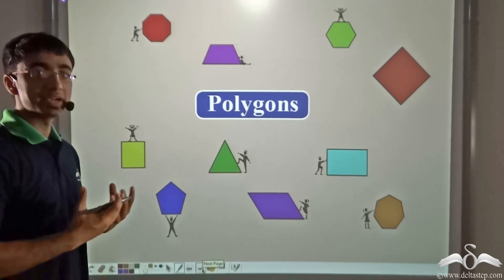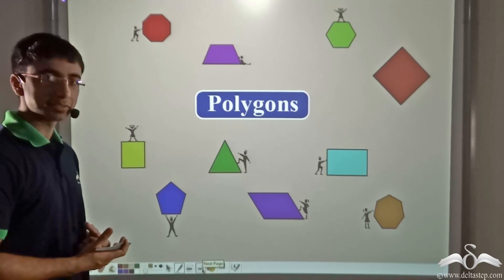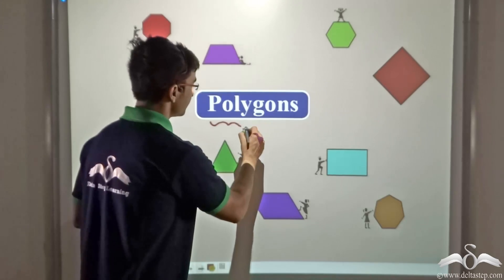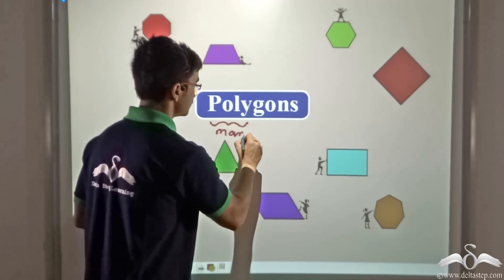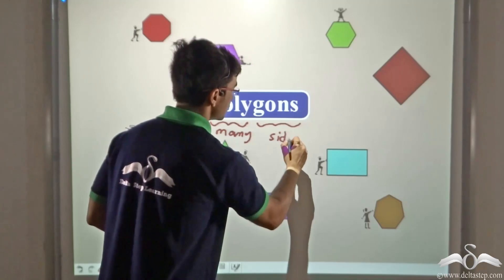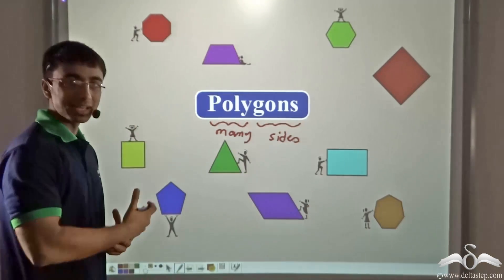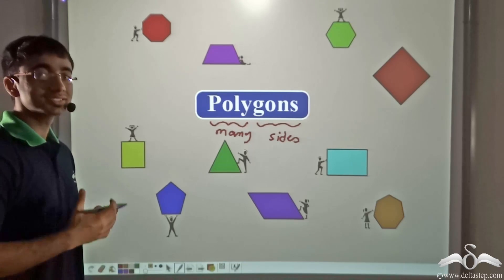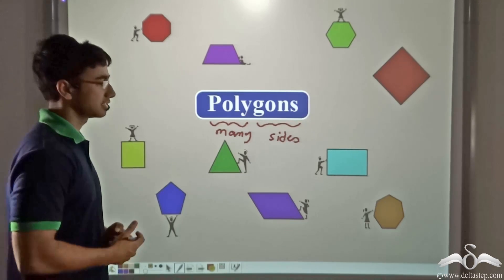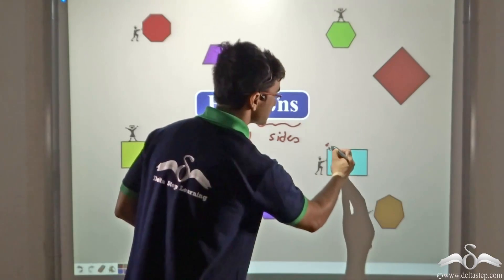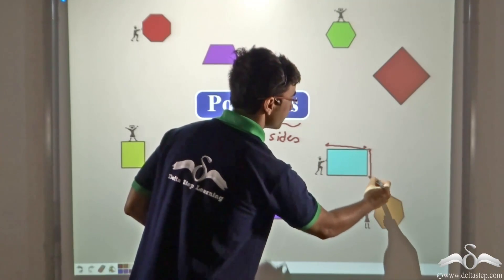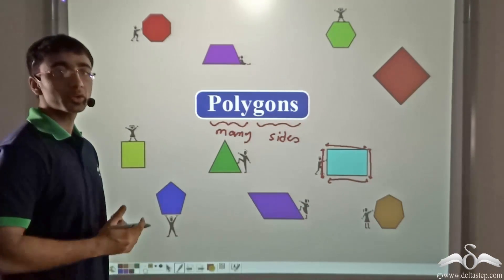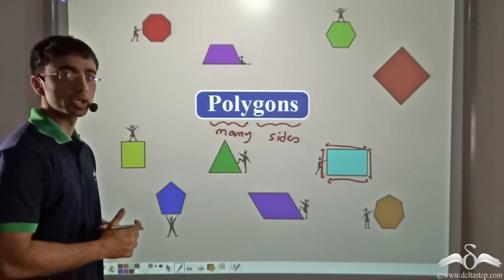Such shapes which are made up of a certain number of line segments — three or more — are known as polygons. The word 'poly' means many and the word 'gons' means sides, so it means a many-sided shape. So now we are going to talk about certain kinds of polygons which have four sides. For example, this particular shape is a polygon and it has four sides.